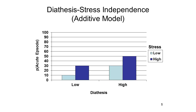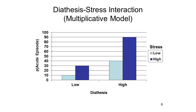In principle, diathesis and stress factors could combine in a number of ways to precipitate an acute episode of mental illness. In an additive model, diathesis and stress are independent of each other, and the likelihood of an acute episode is simply a function of the sum of the diathesis and stress factors. In a multiplicative model, diathesis and stress truly interact, so the combination of the two factors is particularly potent. When stress multiplies with diathesis, the combination greatly increases the likelihood of an episode of mental illness.